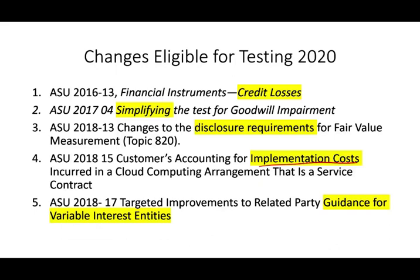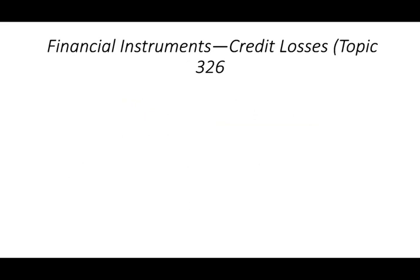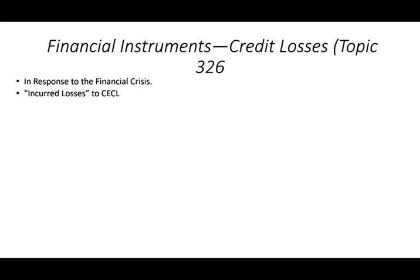Any topic that I have a recording for, I'm going to tell you and put the link in the description. Starting with the financial instrument credit losses, this accounting standard is in response to the financial crisis because banks suddenly incurred a huge amount of losses. We're going to be moving to a new system called current expected credit losses, or CECL. We have to be proactive in the loss recognition.